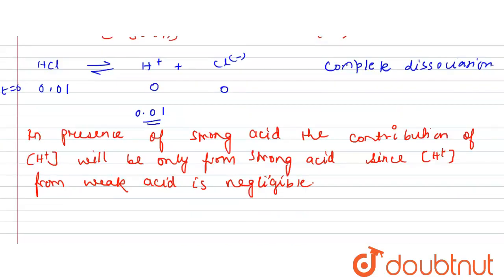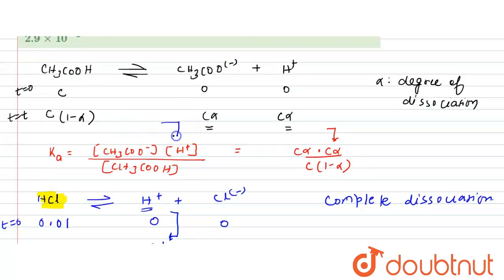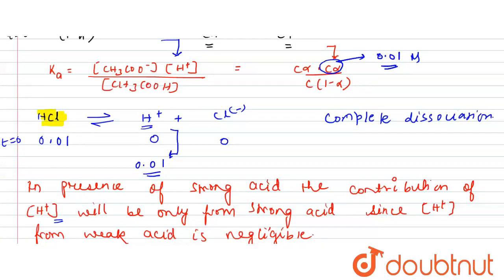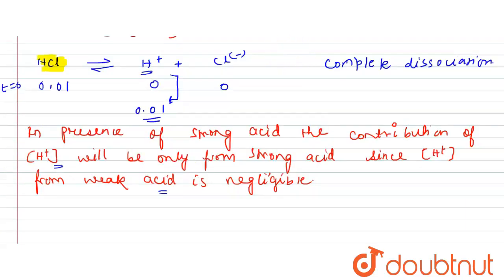In the presence of any strong acid such as HCl, the H⁺ concentration is considered only from the strong acid, because the H⁺ concentration from the weak acid is negligible. So while writing the Ka expression, instead of Cα for H⁺, we can directly write 0.01 molar.